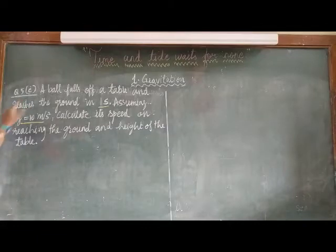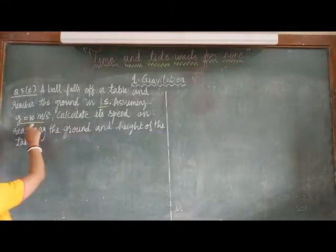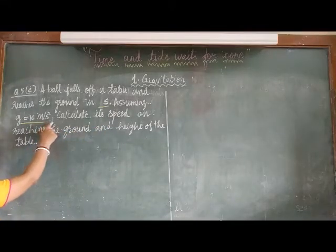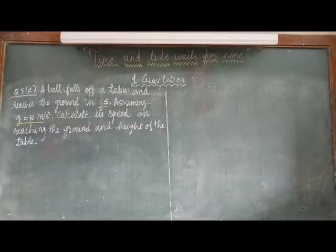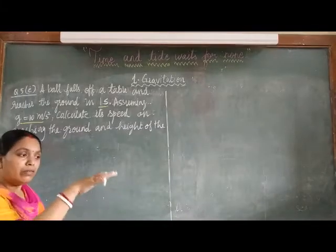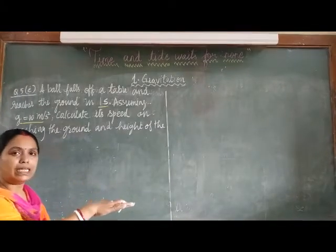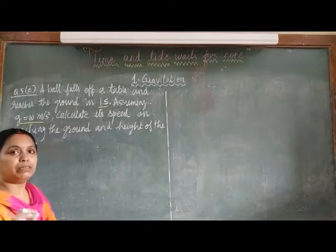Question number 5 is, a board falls off a table and reaches the ground in one second. Assuming G is 10 meters per second squared, calculate its speed on reaching the ground and height of the table. So, the object is placed at a height. When the object is placed at a height, it is having some initial velocity. How much is that? 0 meter per second.